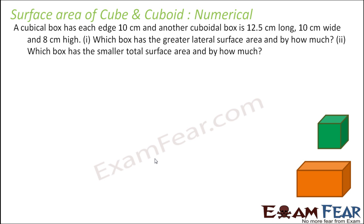The more numericals you solve, the better it is possible. The problem: a cubical box has each edge 10 centimeter. And there is another box — one is a cubical box, the other is a cuboidal box, 12.5 centimeter long, 10 centimeter wide, and 8 centimeter high. Note all the units are in centimeter, so no problem.